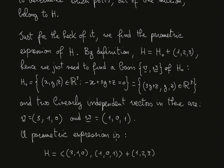Therefore, the parametric expression of H is going to be H₀ expressed through a basis, so the vector space generated by (3, 1, 0) and (1, 0, 1), plus the translation part that is given in the text, it is a generic point belonging to the plane, that was (1, 2, 3).